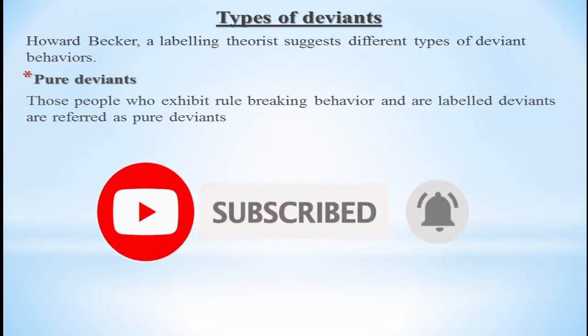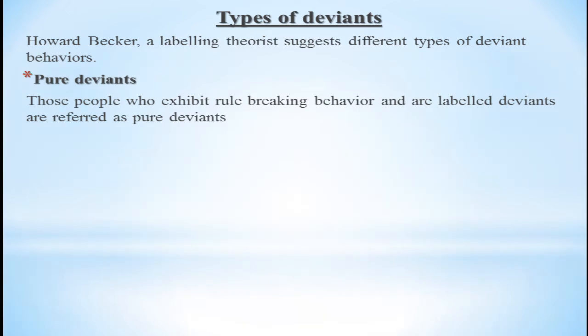Pure deviants are those people who exhibit rule-breaking behavior and are labelled as deviants. These are people who completely break the rules, violate societal norms, and are having bad associations and bad peer groups. They are pure deviants, and the label applied to them is also true — they actually are deviant.